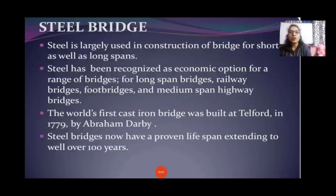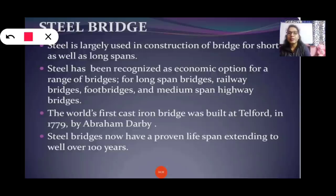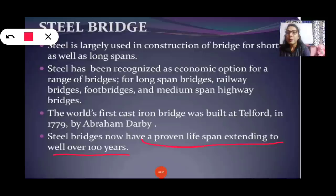Steel bridge: Steel is largely used in construction of bridges for short as well as long spans. Steel has been recognized as an economic option for a range of bridges — long span bridges, railway bridges, port bridges, and medium span highway bridges. The world's first cast iron bridge was built in 1779 by Abraham Darby. Steel bridges now have a proven life span extending well over 100 years.